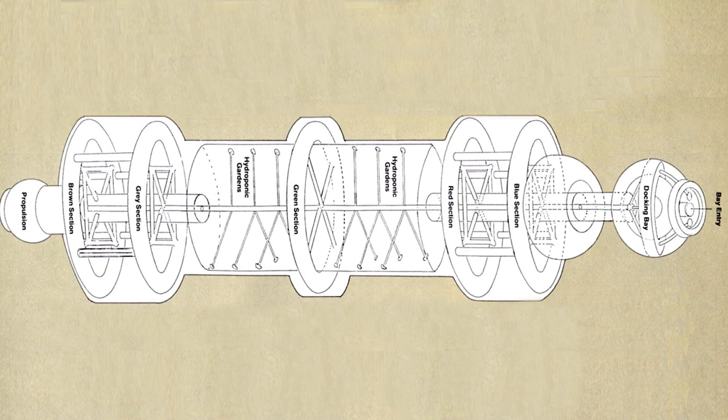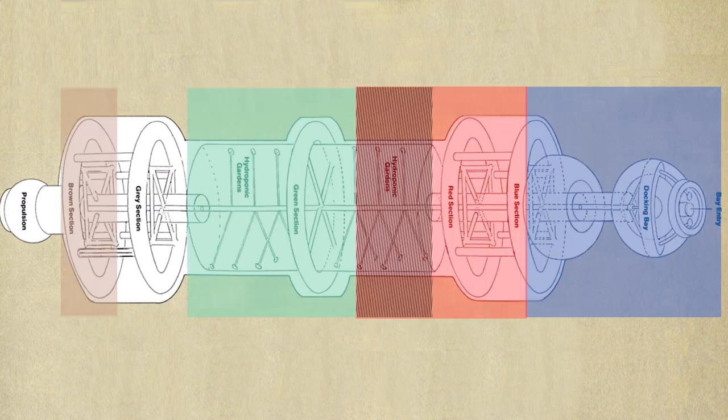The core of Babylon 5 is divided up between six color coded sectors which are blue, red, green, brown, gray, and yellow.